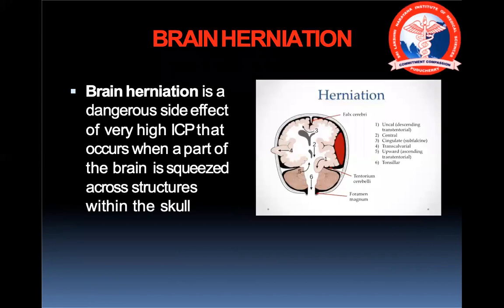Brain herniation is a dangerous side effect of very high intracranial pressure that occurs when part of the brain is squeezed across structures within the skull. The skull is a very closed space, and any increase in pressure will lead to herniation — the original occupant of that space must shift to compensate for the new mass. There can be multiple types of herniation.